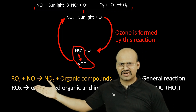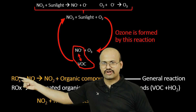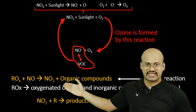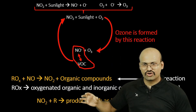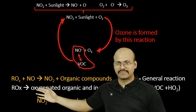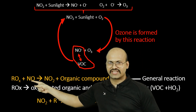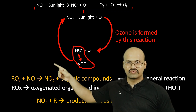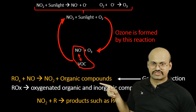Here are the general reactions involving hydrocarbon radicals. These are general reactions — you don't need to memorize them — but we see that when these radicals react with NO, we get NO₂ and certain organic compounds.